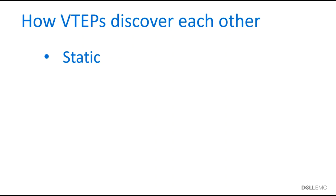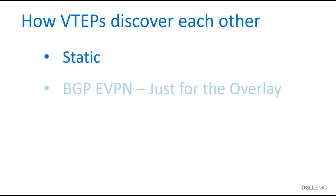With BGP EVPN, VTEPs advertise themselves and auto-discover each other. On VTEP 1, you don't need to manually specify the IPs of VTEP 2 or VTEP 3 — they advertise their IP addresses and VTEP 1 auto-discovers them. Today we'll have two labs: the first demonstrates static VXLAN configuration and the second shows how VTEPs auto-discover each other using BGP EVPN.